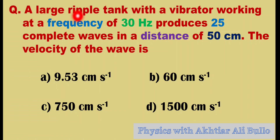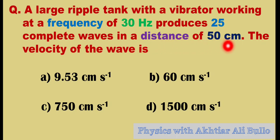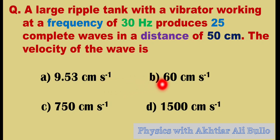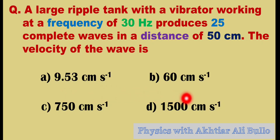A large ripple tank with a vibrator working at a frequency of 30 Hertz produces 25 complete waves in a distance of 50 centimeters. The velocity of the wave is: a) 9.53 centimeters per second, b) 60 centimeters per second, c) 750 centimeters per second, d) 1500 centimeters per second.